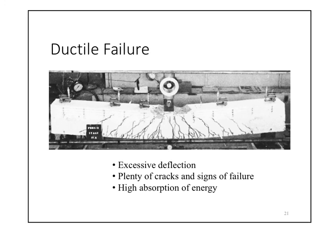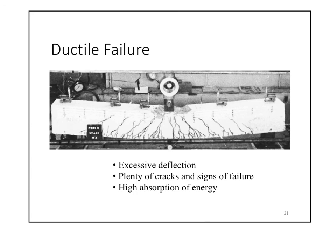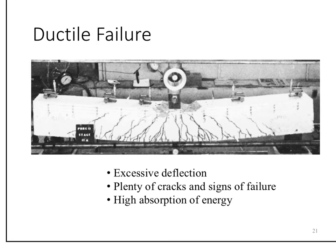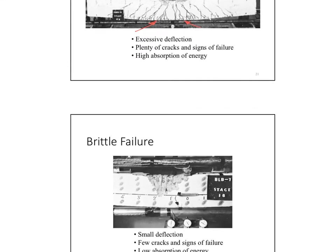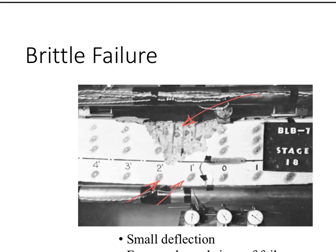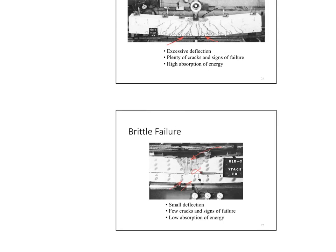These failure modes look very different physically. In ductile (tension-controlled) failure, you see lots of cracks below and excessive deflection before the top concrete finally crushes — there are many warning signs. In brittle (compression-controlled) failure, the concrete crushes suddenly at the top with no visible cracking or excessive deflection underneath. Ductile failure is far preferred: it allows energy absorption and is better for seismic, wind, and impact loads. The phi factor differs between the two modes, as we will see at the end of this chapter.